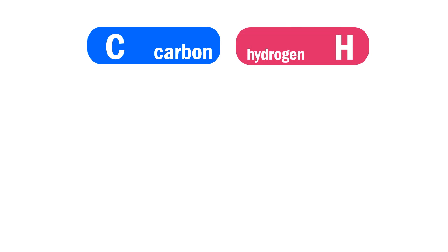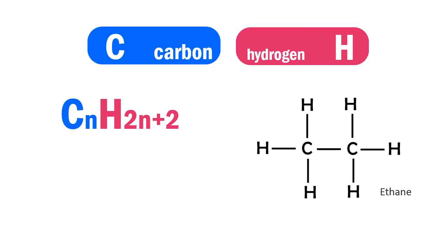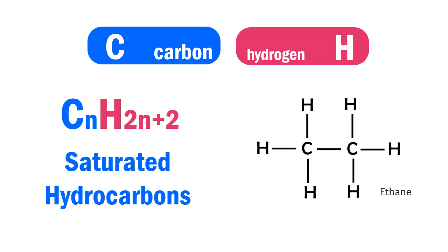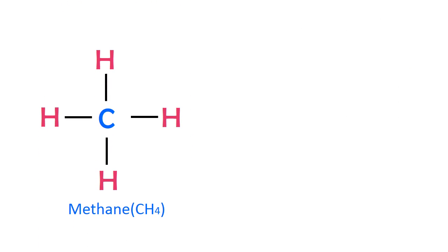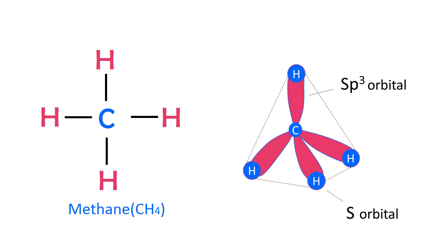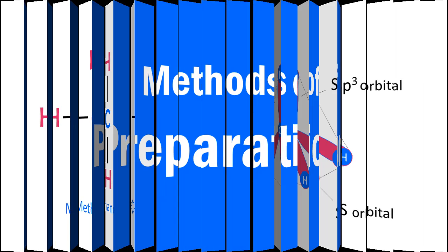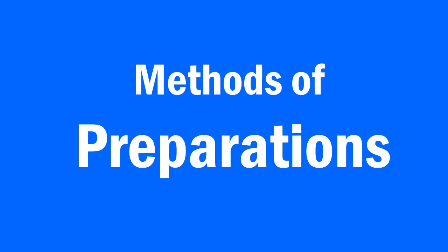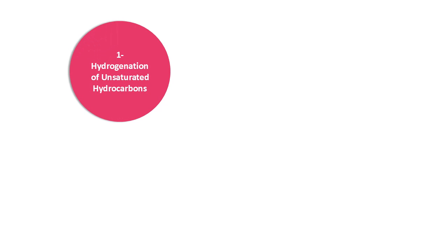Alkanes are the simplest organic compounds made up of carbon and hydrogen only. They have a general formula CₙH₂ₙ₊₂. In these compounds, the four valencies of carbon atoms are satisfied by single bonds to either other carbon atoms or hydrogen atoms. They are therefore known as saturated hydrocarbons. Methane is the simplest member of this family. Each carbon atom in an alkane is sp3 hybridized and has a tetrahedral geometry.